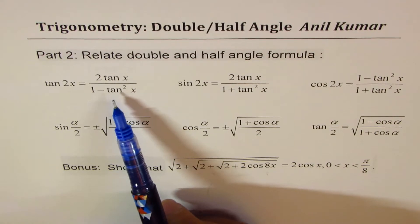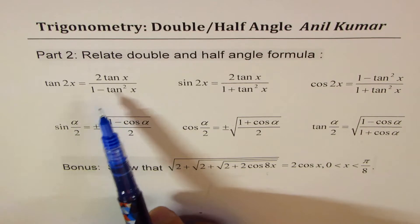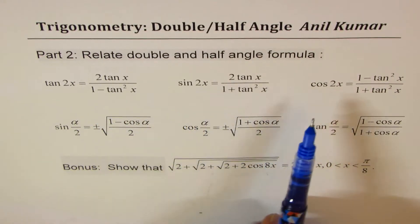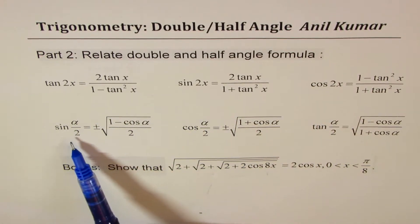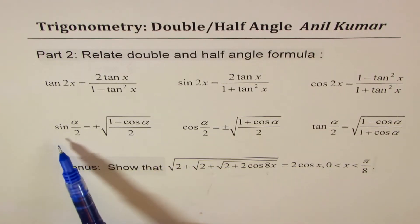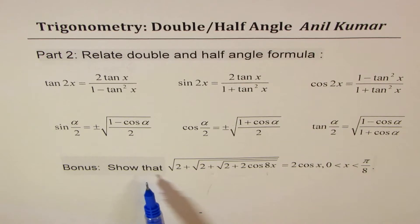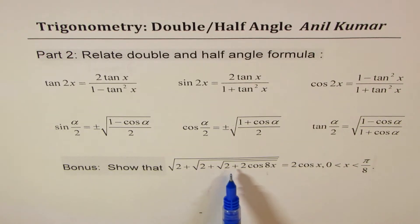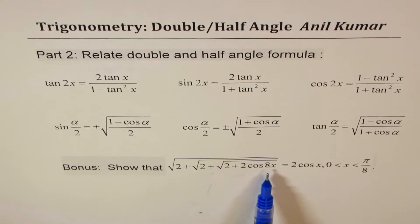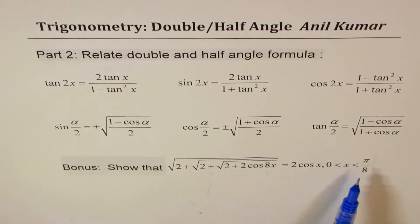In part 1, we didn't really take any examples on tan 2x. Now here, we'll begin by relating tan 2x with sin 2x and cos 2x. We'll also develop half angle formulas for sin, cos and tan, and we'll have a bonus question: square root of 2 plus square root of 2 plus 2 cos 8x equals 2 cosine x, when x is between 0 and pi by 8.